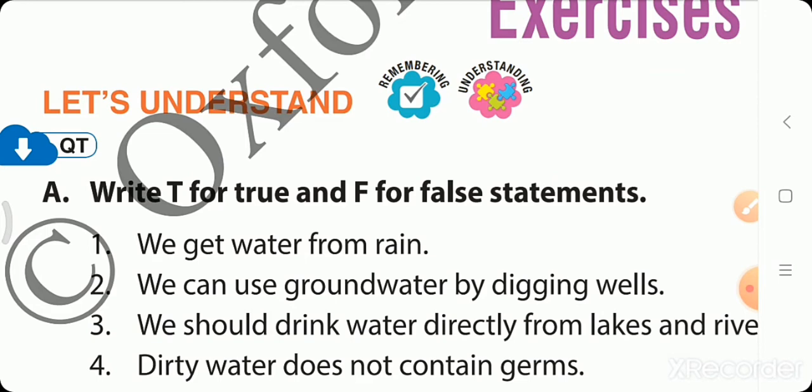First question is true false. Write T for true and F for false statements. We get water from rain. Is that true? Yes, because rain is the main source of water. We can use groundwater by digging wells. Okay, that is also true.